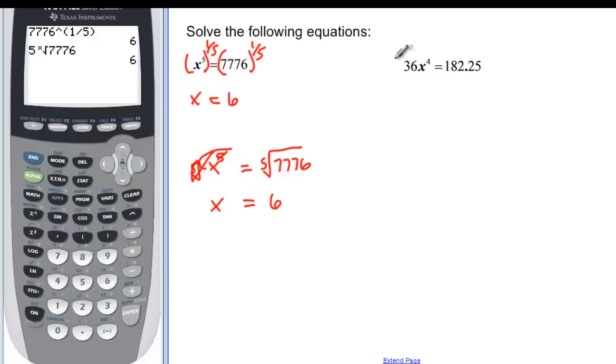Alright, x to the fourth, but it's got a 36 on the front of it, so we have to divide off the 36. You've got to get to that base by itself, just like we did when we were solving with the exponent as the unknown. And I don't know what that is right off the top of my head. So 182.25 divided by 36 is going to give me x to the fourth being equal to, isn't that beautiful, 5.0625.